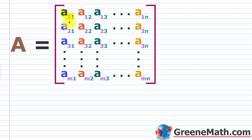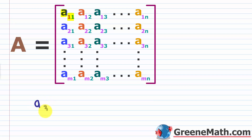As we go down the left side of the matrix, the column stays at 1 but the row increases, ending at a sub m,1. In the bottom-right corner we have a sub m,n. This tells us the matrix is m by n — it has m rows and n columns. They might ask you to find a specific entry, like a sub 3,3, which means the element in the third row, third column.